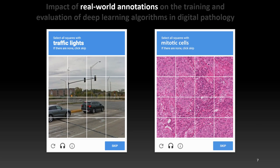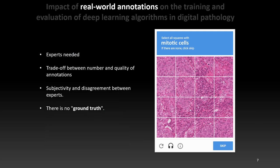But in digital pathology, you can't do that. If you ask thousands of random internet users to select all the mitotic cells in an image, you will not get very useful annotations. In digital pathology, the annotations are complex and they require trained experts. There will always be a trade-off between the number of annotations you can get and the quality of these annotations. There is also a certain amount of subjectivity and disagreement between experts as the criteria used by pathologists can be very difficult to evaluate.